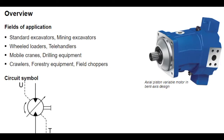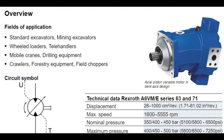The Rexroth A6VM and A6VE Series 63 variable motor comes in 11 different sizes, from 28 to 1,000 cubic centimeters per revolution. Depending on size, the motors have a maximum speed range of 1,600 to 5,555 revolutions per minute at a nominal pressure of 400 or 450 bar, with temporary maximum pressure between 450 and 500 bar.